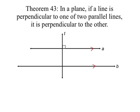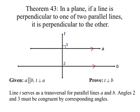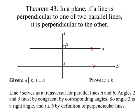Theorem 43: in a plane, if a line is perpendicular to one of two parallel lines, it is perpendicular to the other. We have a short proof. We're given that line A is parallel to line B, and that line T, the transversal, is perpendicular to line A. Our job is to prove that the transversal is also perpendicular to line B. Line T serves as a transversal for the parallel lines A and B, so angles 2 and 3 must be congruent by corresponding angles. Since angle 2 is congruent to angle 3, it must be a right angle, so T is perpendicular to B by definition of perpendicular lines.